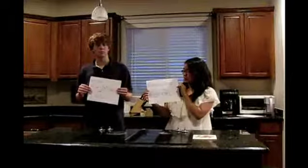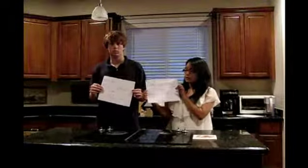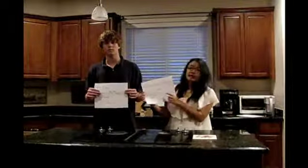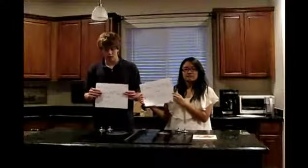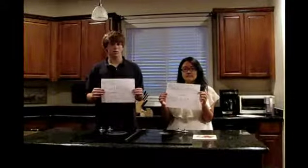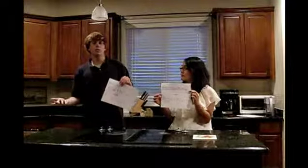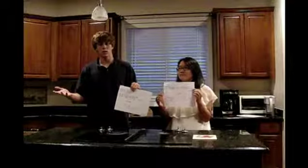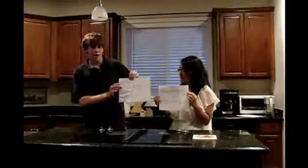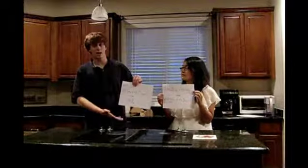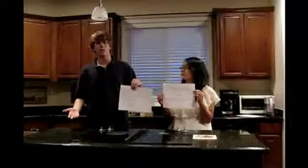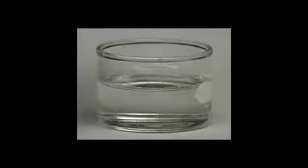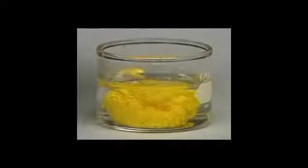Sodium iodide in aqueous solution plus lead nitrate in aqueous solution yields sodium nitrate in aqueous solution plus lead iodide as a solid. In net ionic form, all the ions that don't form any precipitates are just spectator ions — they don't do anything. But here we have iodide ions and lead ions forming lead iodide, a beautiful yellow compound. Adding very pale yellow sodium iodide to colorless lead nitrate produces a yellow precipitate.